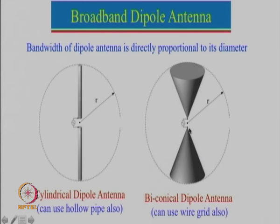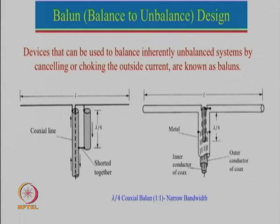In general, from a microwave generator the feed which is available is more like a single feed. So we always have to design an unbalance-to-balance network. Let us look into the different configurations which have been used — we use a balun, which stands for balance to unbalance design. Here we have a coaxial feed which needs to be connected to the dipole antenna.